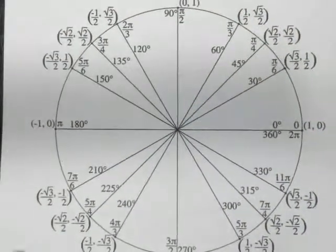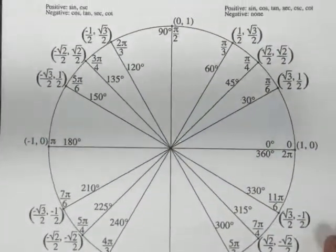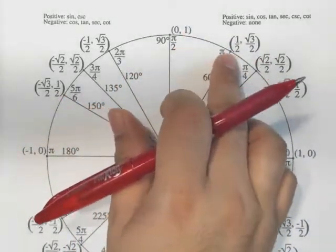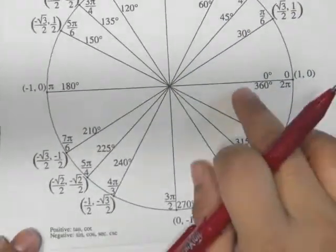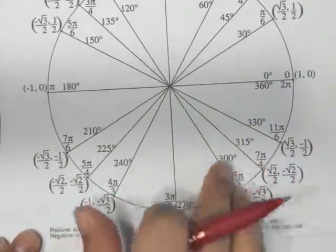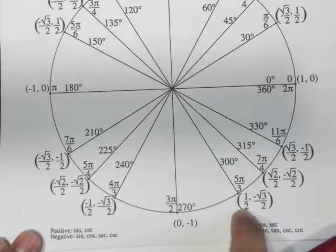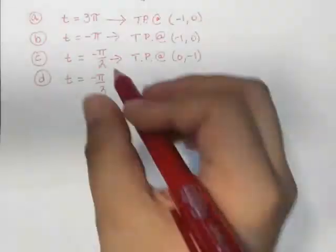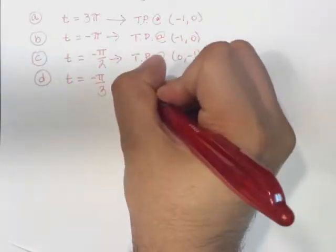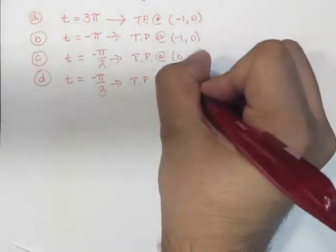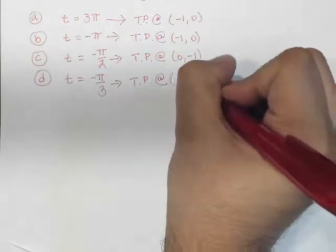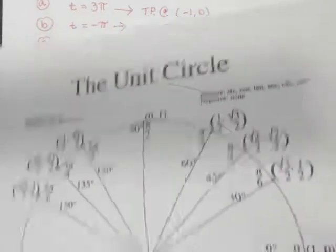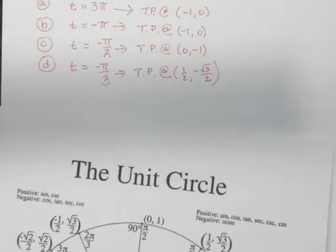Alright, so negative π over 3. We know that π over 3 is 60 degrees in. So negative π over 3 then is going to be 60 degrees down. So basically 360 minus 60 puts you at 300. So here we have the terminal point half and then negative square root of 3 over 2. Okay, so let's go ahead and jot that one down. Okay, so half, negative square root of 3 over 2. Now I'm going to toss another one and let me just jot it down here for you.